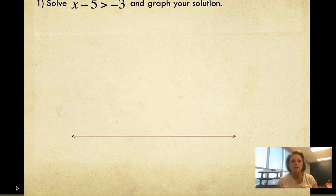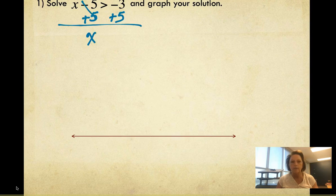We have solve x minus 5 is greater than negative 3 and graph your solution. First thing we're going to do is just act like this is an equation and we're going to get rid of our negative 5 by adding 5 to both sides, and we get x is greater than 2. We didn't multiply or divide at all, so we don't have to worry about flipping our inequality symbol.